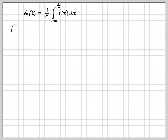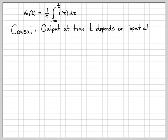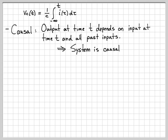Now let's talk about causality. Causal means the output depends on the current input and past inputs — it's okay to depend on past inputs; we just can't depend on future inputs. If we look at this equation, at time t the output depends on the input at time t and all past inputs. For causality, that is totally fine. So this is a causal system — the system output only depends on the current and past inputs.